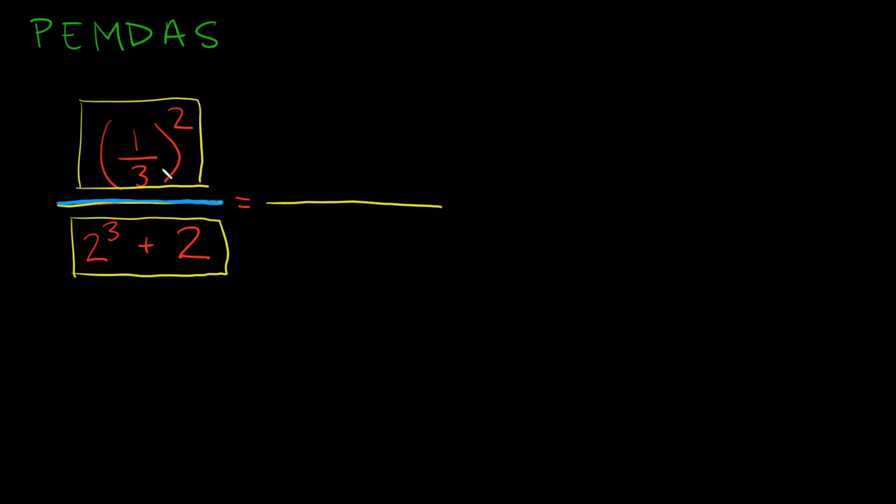Let's start with the top. Here we have one third raised to the second power. So how do we start simplifying that? Well we're going to go to our order of operations and in case you don't remember I wrote it up here which is PEMDAS and it stands for parentheses, exponents, multiplication or division, addition or subtraction. And you always start with parentheses and you just work your way down the list that way.